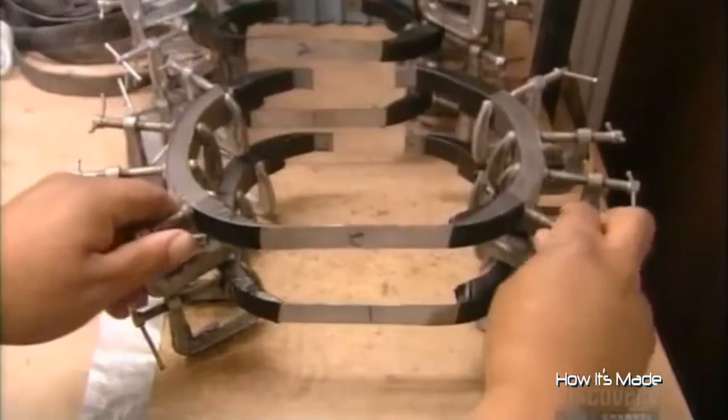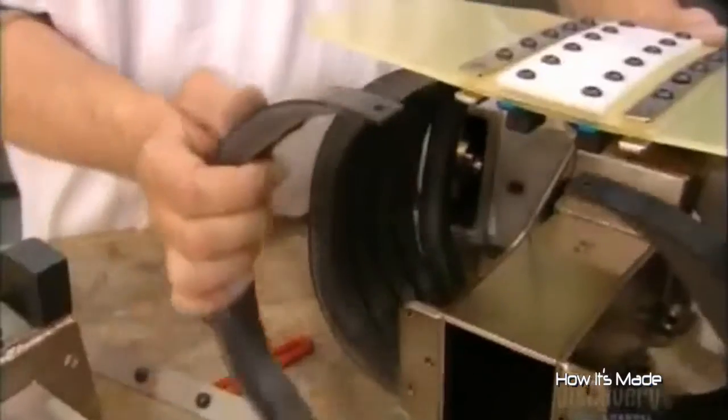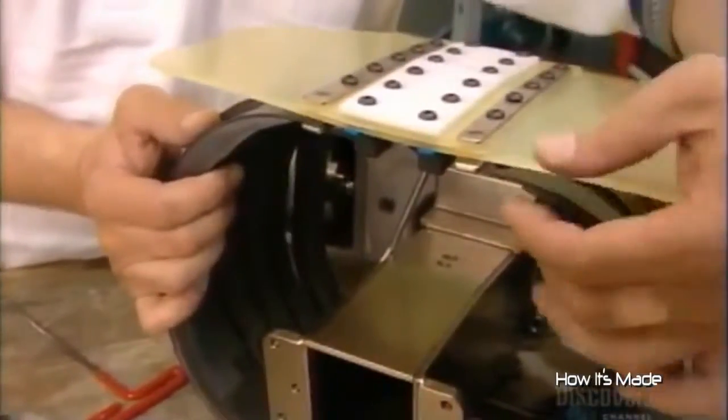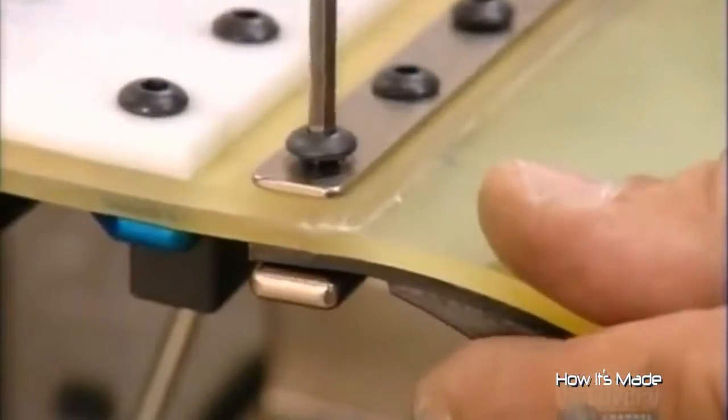In a test crash, these dummy ribs compress the same way human ribs do. A technician bolts the entire rib assembly to the spinal column and covers it with a plastic chest plate called a bib.